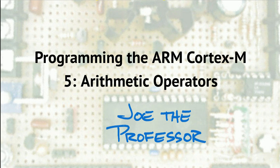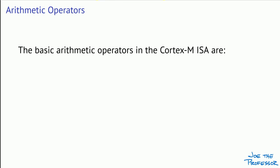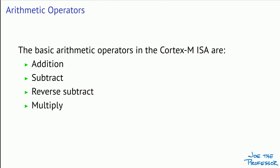Let's talk about the basic arithmetic operators available in the Cortex-M instruction set. These are just the basic operators — there are more sophisticated operators we won't have time to cover today. Of course we can do addition and subtraction, and also something called a reverse subtract, and we'll see why that's important. Multiplication, and for the Cortex-M3 and M4 processors we can also use division instructions.